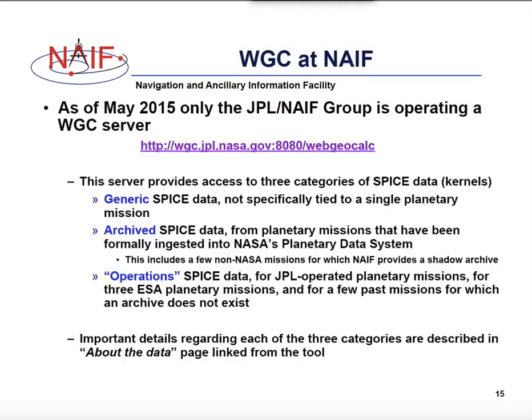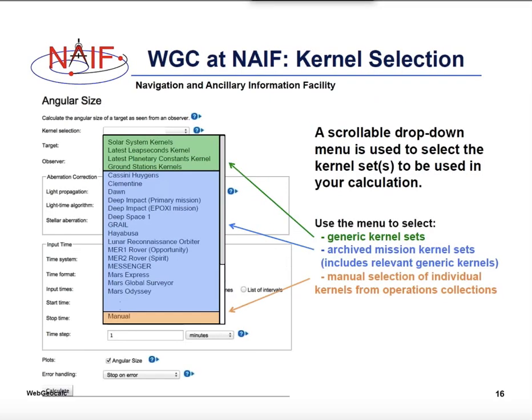As of May of this year, only our group at JPL is running a WGC server, and this server has access to all of the SPICE data provided on the NAIF server, such as generic SPICE data, PDS archived SPICE data, and SPICE data for operational missions. Looking at the WGC selection interface, you will see kernel sets appearing with generic kernels at the top and archived missions in the middle, but also allowing manual load of any SPICE kernels provided on our server through the manual option at the bottom.